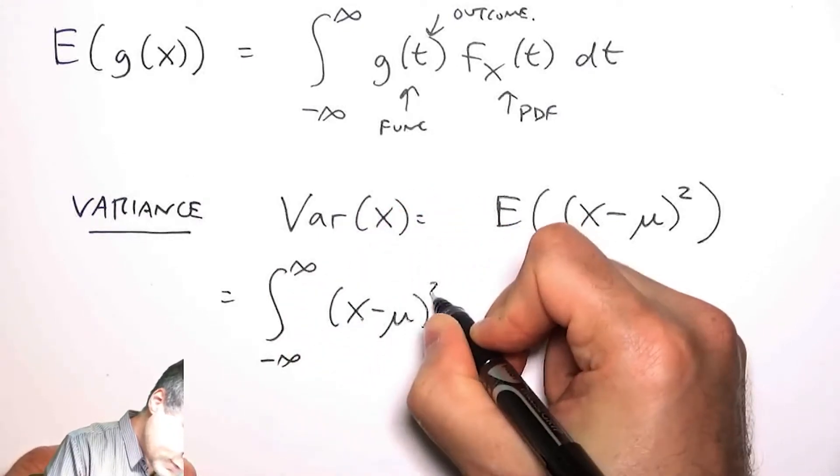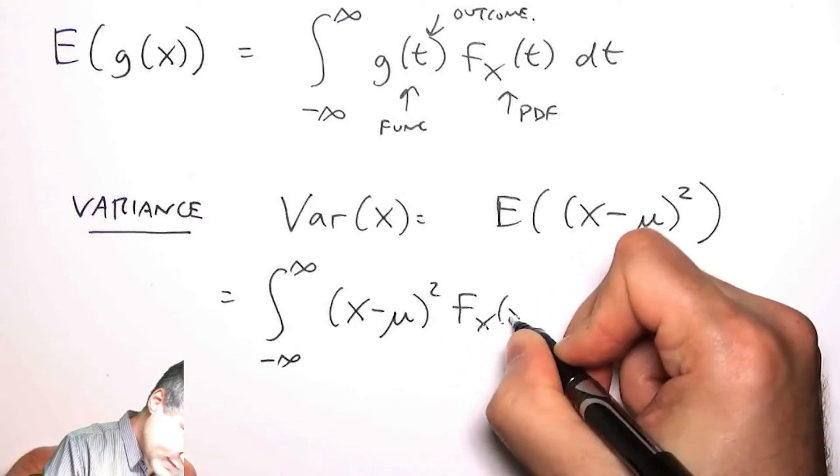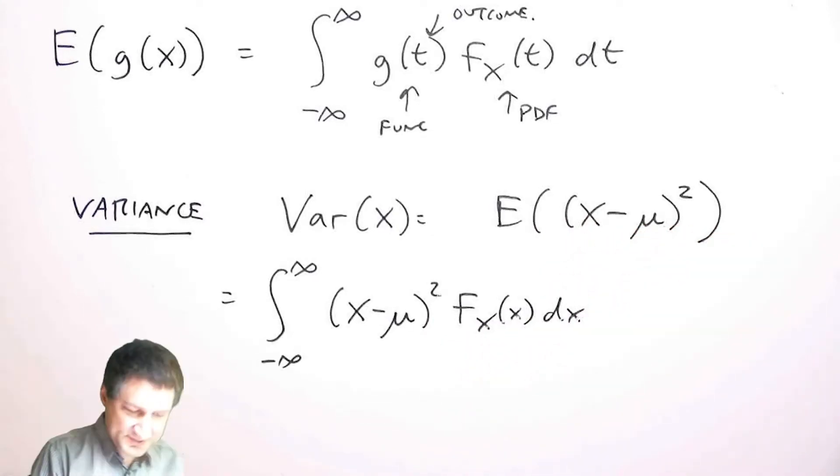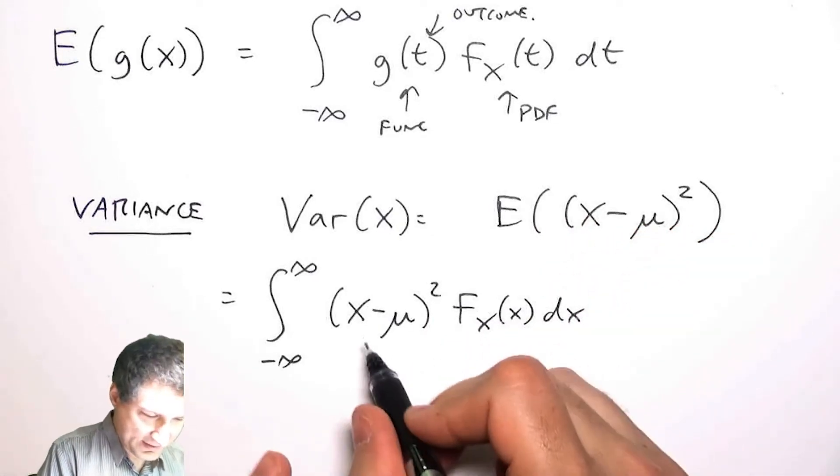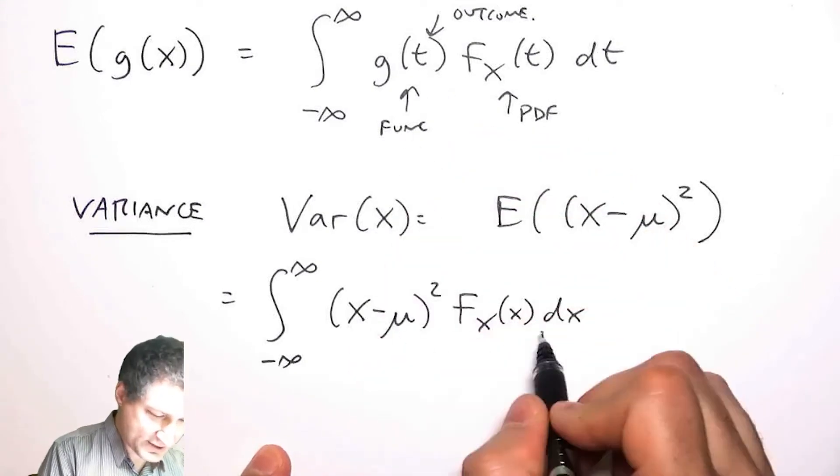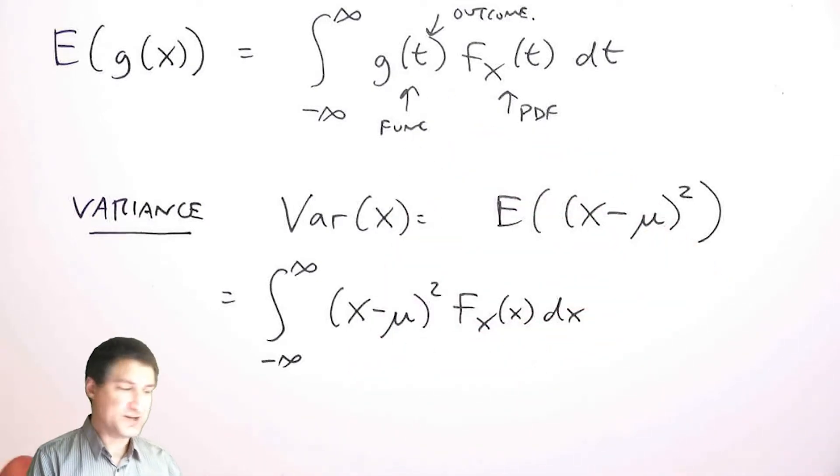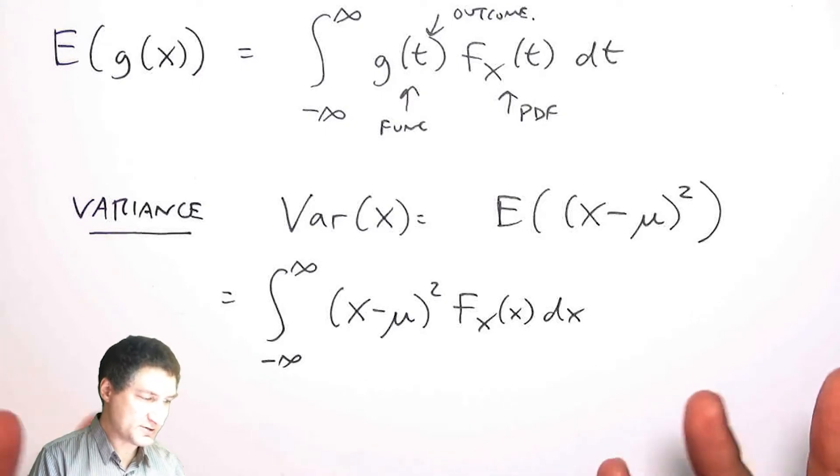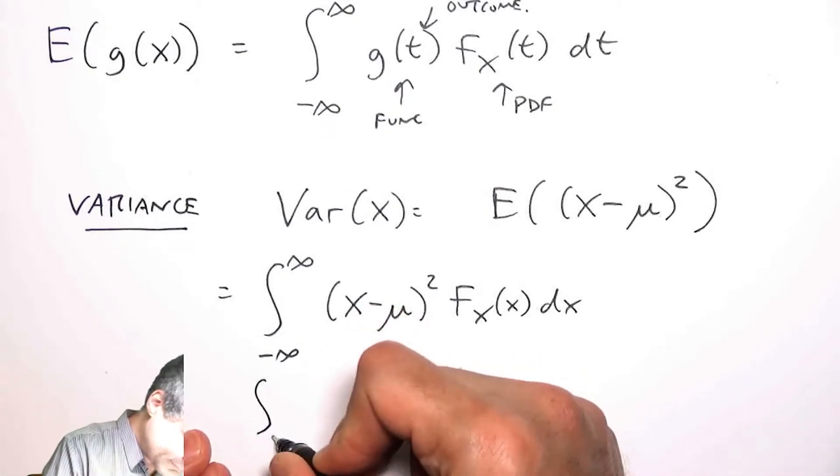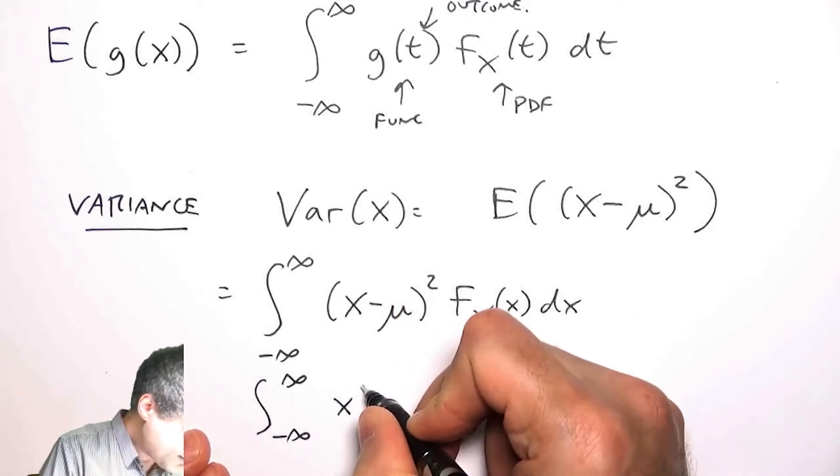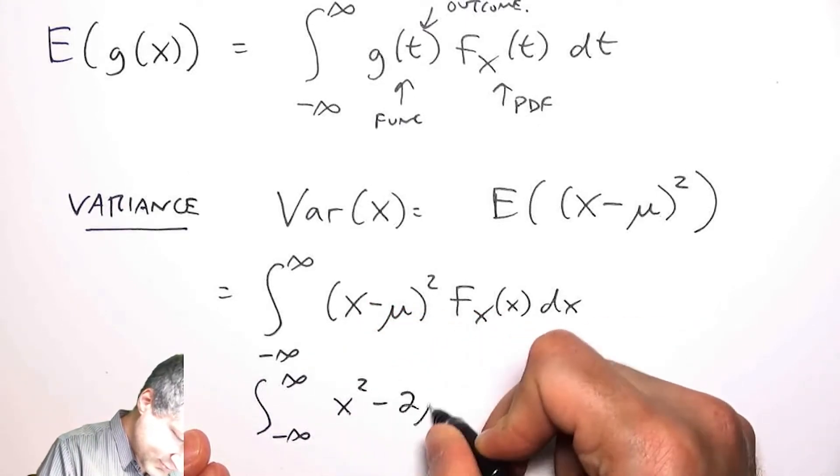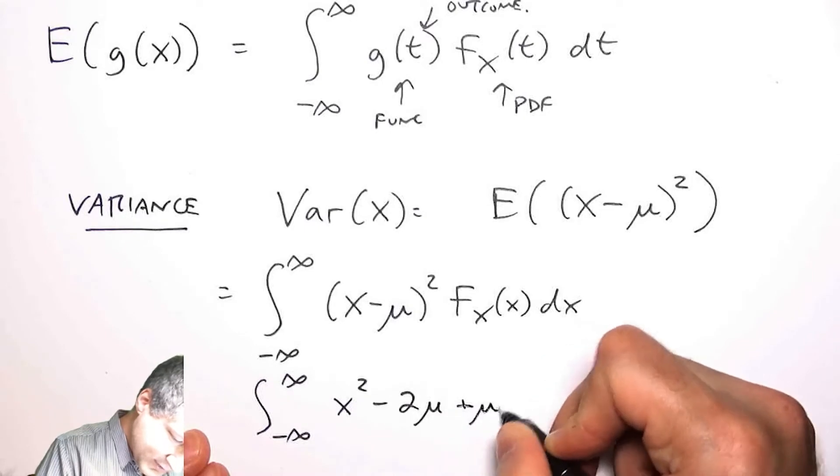That's like saying I have the integral of X minus μ squared times the PDF. I switch back and forth between using t and x, but it doesn't matter because this is just a dummy integration variable. Here what I have is X squared minus 2μX plus μ squared times the PDF.